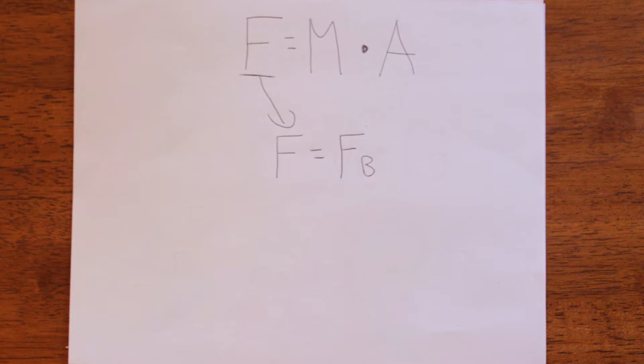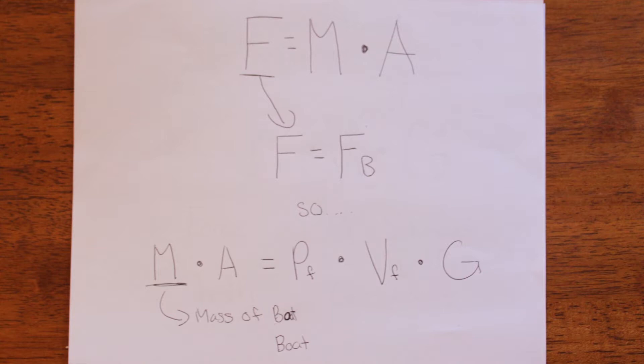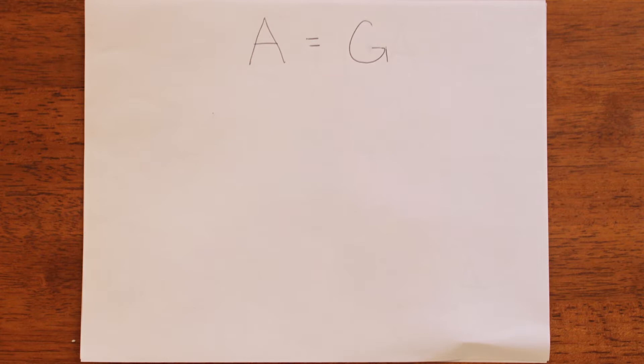Since these forces must be equal, we set them equal to each other: mass of the boat times acceleration equals P of F times V of F times G. Since A and G are equal, they cancel out, and we are left with mass of the boat equals PF times VF.